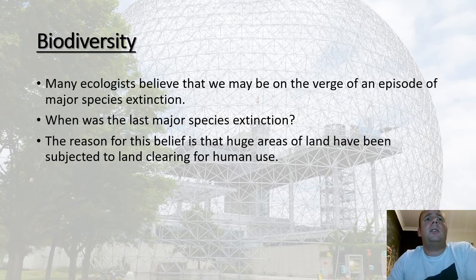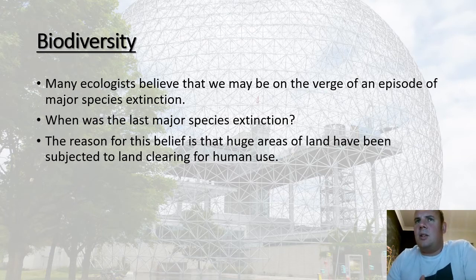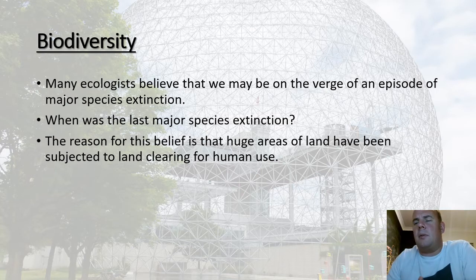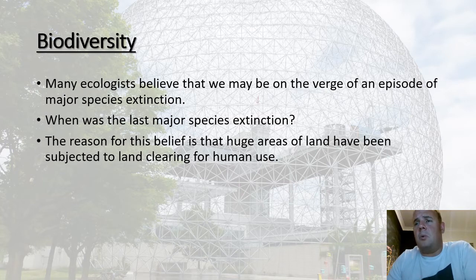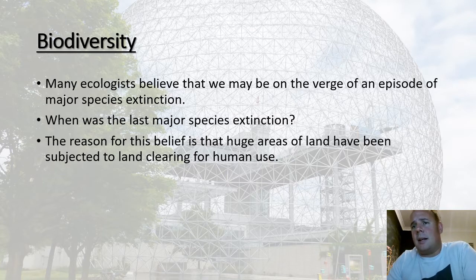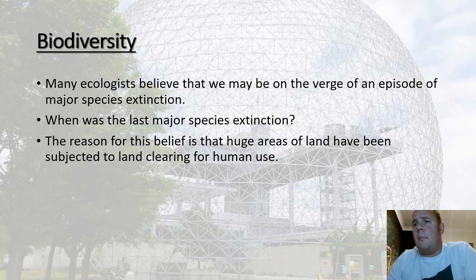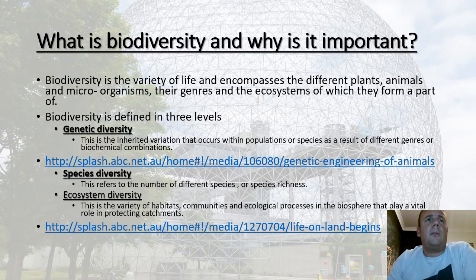Many ecologists believe we may be on the verge of a major episode of species extinction. The last major extinction event was about 65 million years ago when the dinosaurs died out. The reason for this belief is that huge areas of land have been cleared for human use. Biodiversity refers to the number of species of plants and animals within a community or ecosystem.